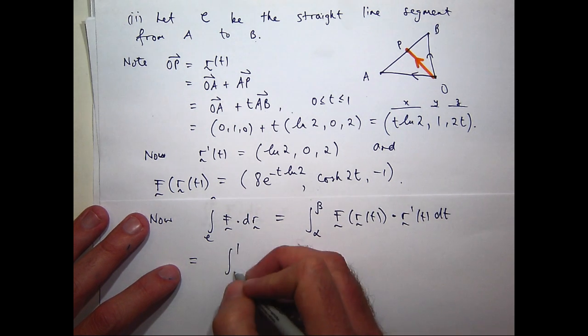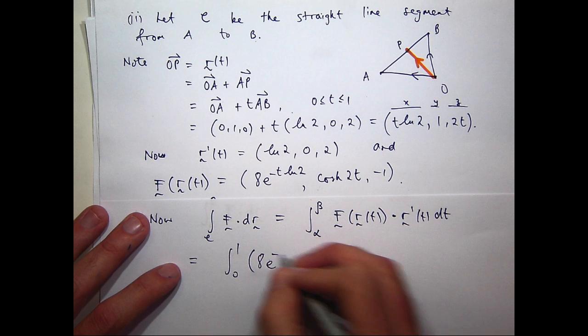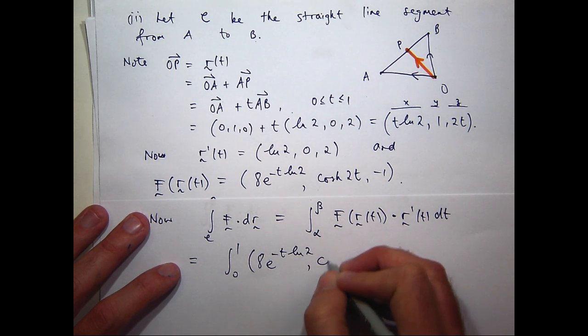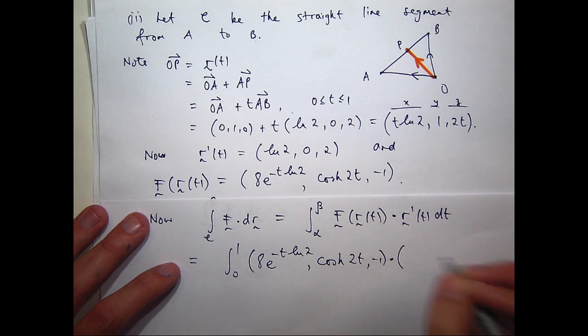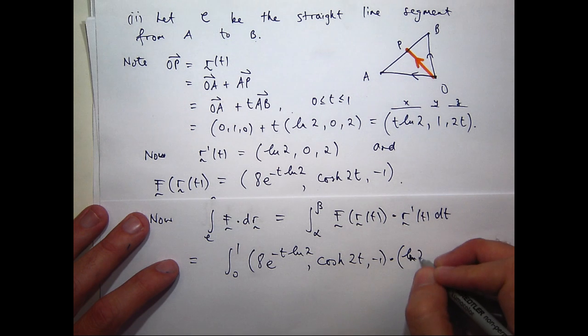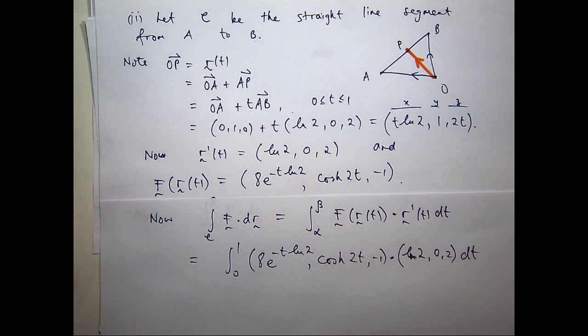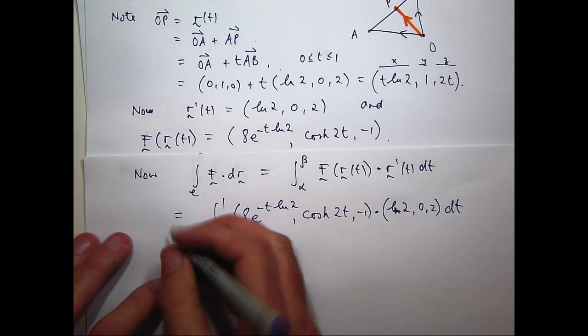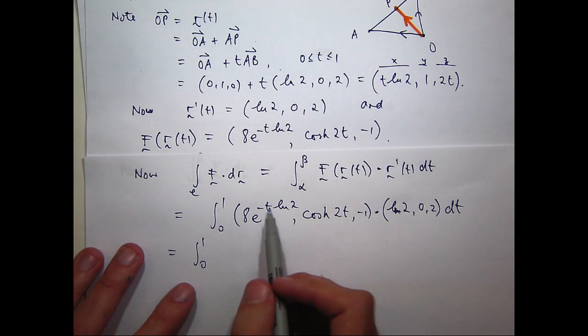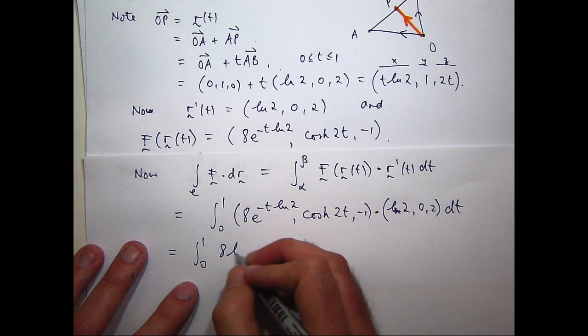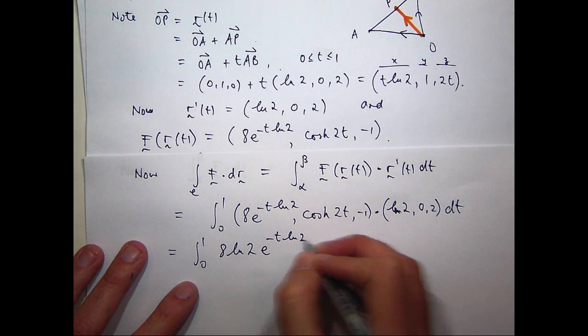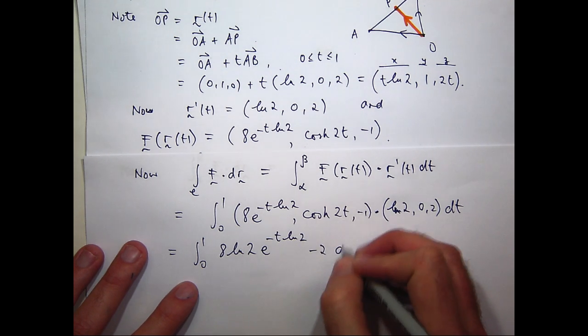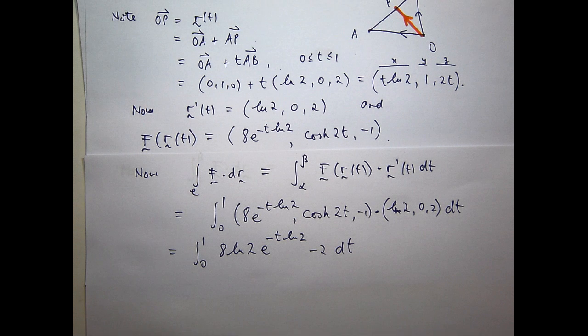So for our problem, we'll get something like the following. So now let's take the dot product again. Multiply the first component with the first component, second component with the second component, et cetera, and add them all up. So, the first one's going to give me something like the following. The second one's going to give me 0 and the third one's going to give me minus 2. Alright, so this is now just a regular integral from high school that we can knock over.